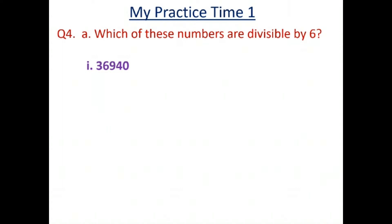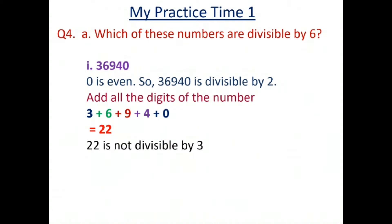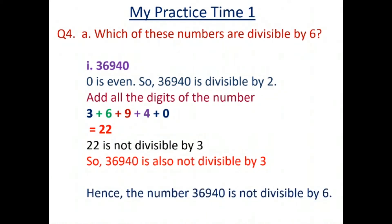Now we check divisibility by 3 by finding the sum of the digits: 3 plus 6 plus 9 plus 4 plus 0 equals 22. Since 22 is not divisible by 3, this number is not divisible by 3. Therefore 136940 is not divisible by 6.